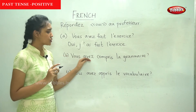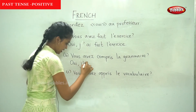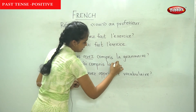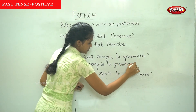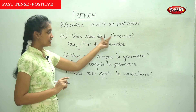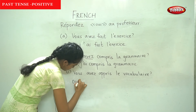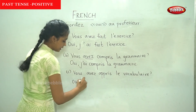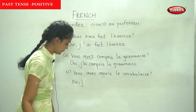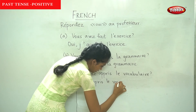Very simple — you just change the conjugation accordingly. The next sentence: vous avez compris la grammaire? Oui, j'ai compris la grammaire. All we are doing is changing the subject and the conjugation of the auxiliary verb; the rest stays the same. Now the last sentence: vous avez appris le vocabulaire? Oui. Vous becomes je, the auxiliary is avoir — j'ai appris le vocabulaire.